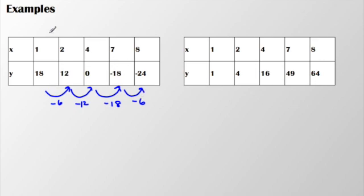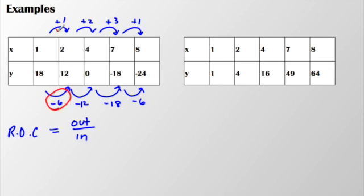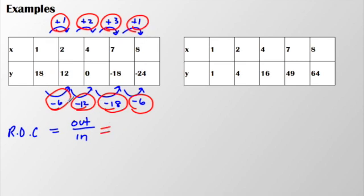However, from 1 to 2 you have a change of positive 1. 2 to 4 you have a change of positive 2. 4 to 7 is a change of positive 3. And 7 to 8 is a change of positive 1. But remember what you want to focus on for the rate of change is the output divided by the input. When I focus on those numbers: negative 6 divided by positive 1, negative 12 divided by positive 2, negative 18 divided by positive 3, negative 6 divided by positive 1, they are all the same value. Even though the rate from one number to the next changes, the relationship between the output and the input always remains at negative 6.